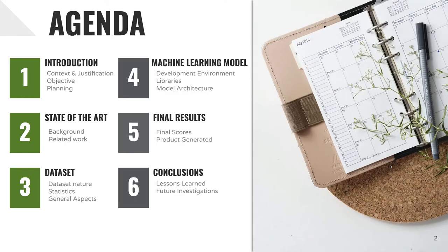The agenda for today has six parts: the introduction, state-of-the-art, dataset, machine learning model, final results, and conclusions. The most important part from the perspective of data science might be the machine learning model and the architecture defined, but the results are also important and the introductory part must be highlighted as well.